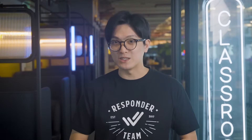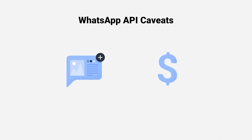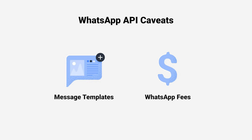However, there are a few caveats. Meta has some rules when it comes to messaging using WhatsApp API. You, as a business, can only initiate conversations using pre-approved message templates, so there is an approval process from Meta. Meta also charges for the conversations you have, which means there are WhatsApp fees that your business must consider before using the API.